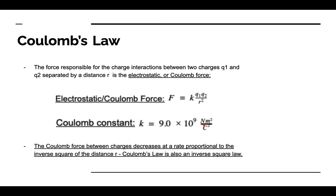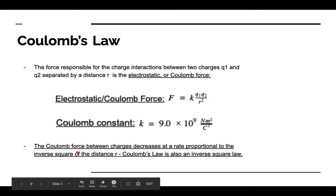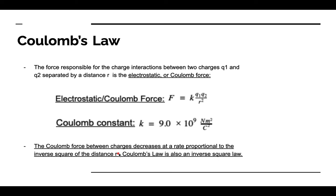The Coulomb force is strikingly similar to the force of universal gravitation. Specifically, the universal gravitational constant G is replaced by the Coulomb constant K, and the two masses M1 and M2 are replaced by the charges Q1 and Q2, but we still have r squared. The Coulomb force, just like the gravitational force, is an inverse square law — the force between charges decreases proportional to the inverse square of the distance as charges get further away from each other.